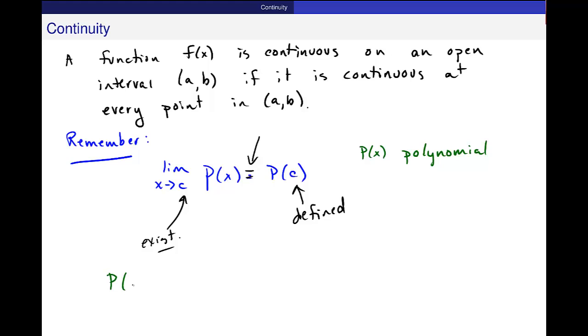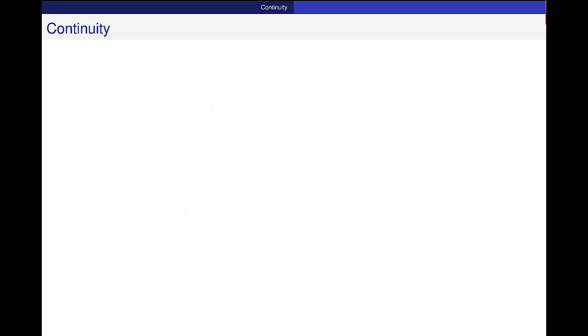If p(x) is a polynomial, then p(x) is continuous on (-infinity, infinity), everywhere on the real line. That's true for polynomials. Now I want to talk about, then,